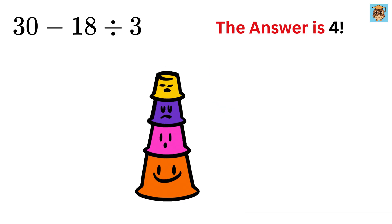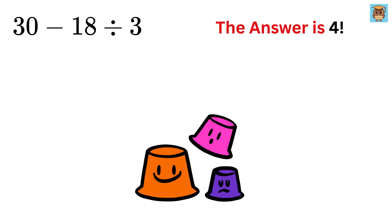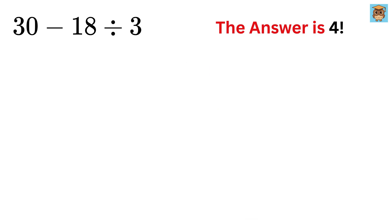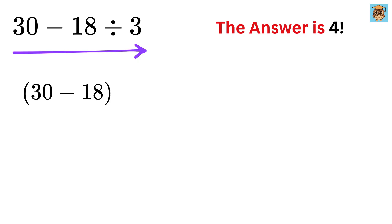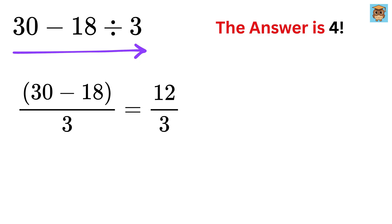We have to take care of the order in which we perform the operations. At first glance, many people might think, let us just go left to right. And thus they will do 30 minus 18 first, which gives them 12, and then divide that by 3 to get 4. And this matches the result of 4, just like the problem claims.